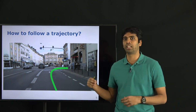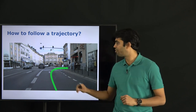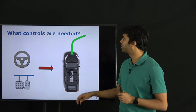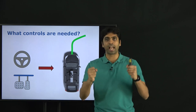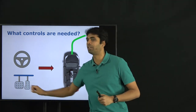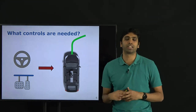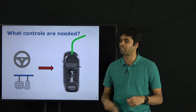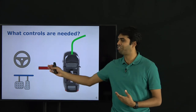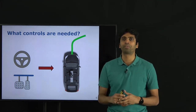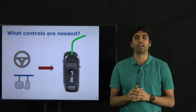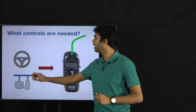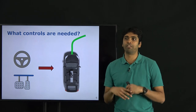We look at different strategies on how to perform this kind of tracking. Given a trajectory, the next question is: what is the steering angle to set, and how much should I press on the gas or brake in order to follow this trajectory efficiently? This is how humans do it too — rotating the steering wheel and pressing gas or brake. The basic question is: what are the controls needed to move my car along a trajectory?